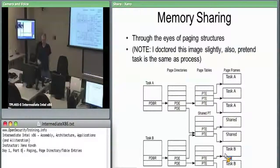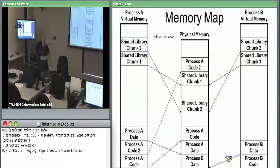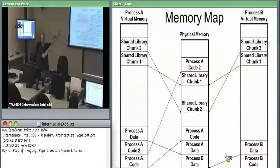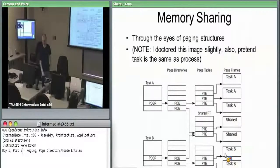Conceptually, you've got two different virtual address spaces and one physical address space. In practice, you've got two different page tables and page directories, but maybe eventually they lead to the same physical memory.